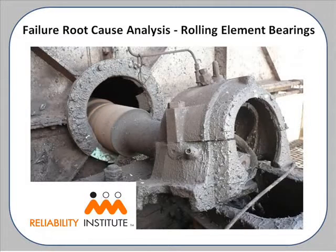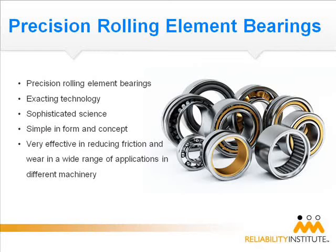This program is about rolling element bearings, why they fail, and what you and your organization can do to prevent this costly interruption to production. Precision rolling element bearings come in many shapes and sizes. They are precision parts of our rotating equipment, based on sophisticated technology and science, developed to allow our rotating equipment to perform in an optimum manner. Their main purpose is to effectively reduce friction and wear of the rotating parts of our machinery.